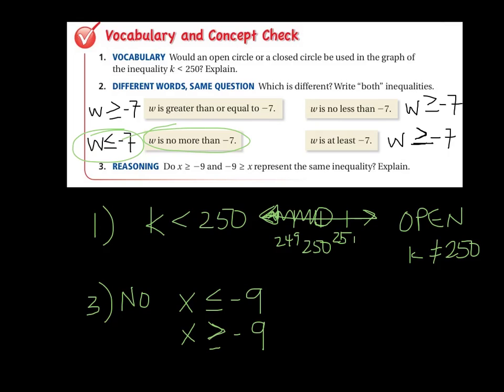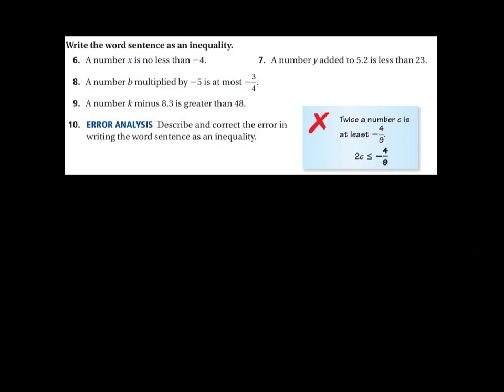Okay, let's keep moving. And we have some more here. So let's go ahead and write these word sentences as inequalities. So number 6. A number x is no less than negative 4. So put in your x, put in your negative 4. If our number is not less than negative 4, could it be equal to negative 4? Well, yes it could. It just can't be less so it is greater. Let's go ahead and draw the graph for that. Sketch the graph for that real quick as well.